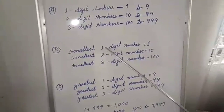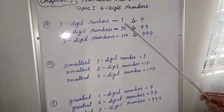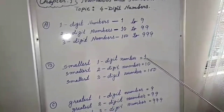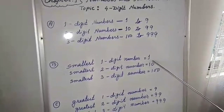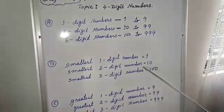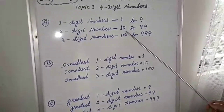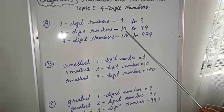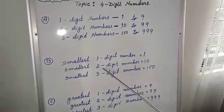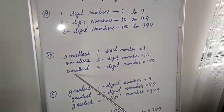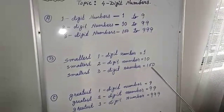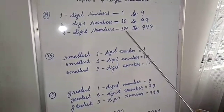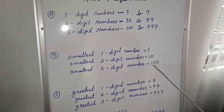The smallest 1-digit number is 1, because 1-digit numbers start from 1. The smallest 2-digit number is 10, because 2-digit numbers start from 10. The smallest 3-digit number is 100, because 3-digit numbers start from 100.